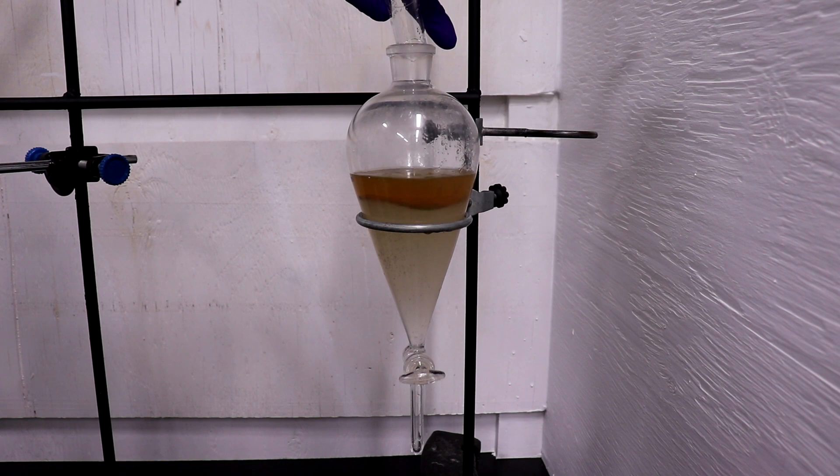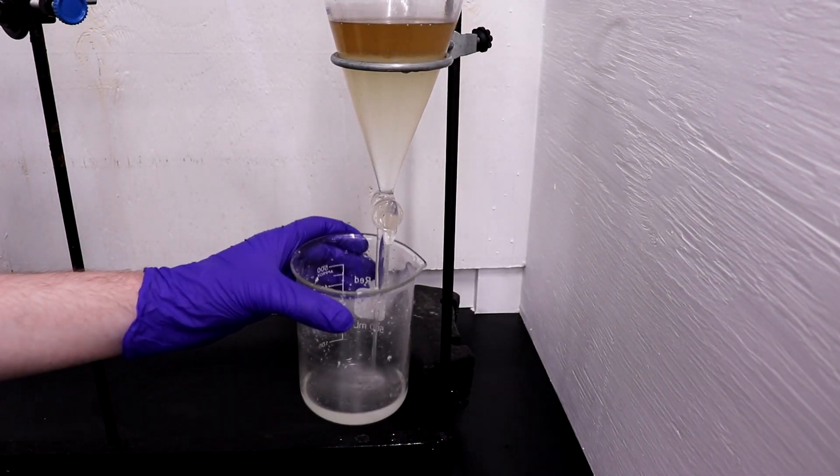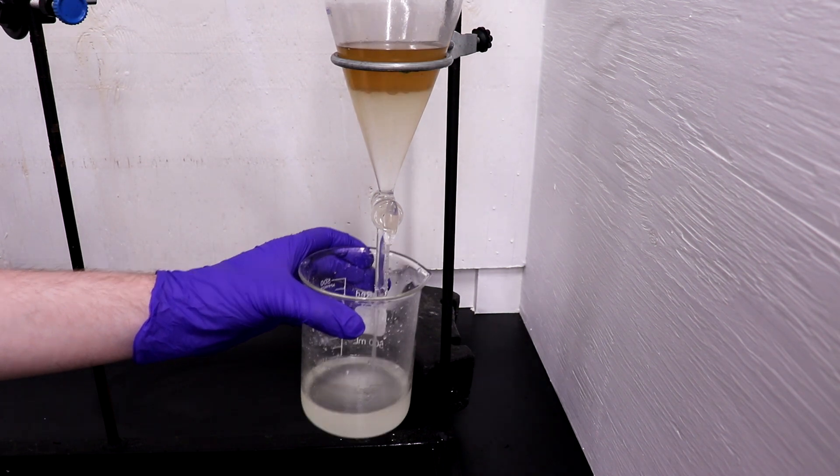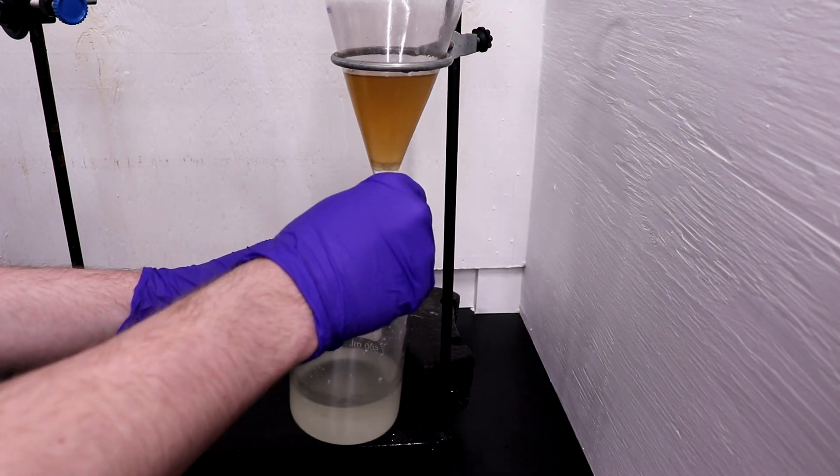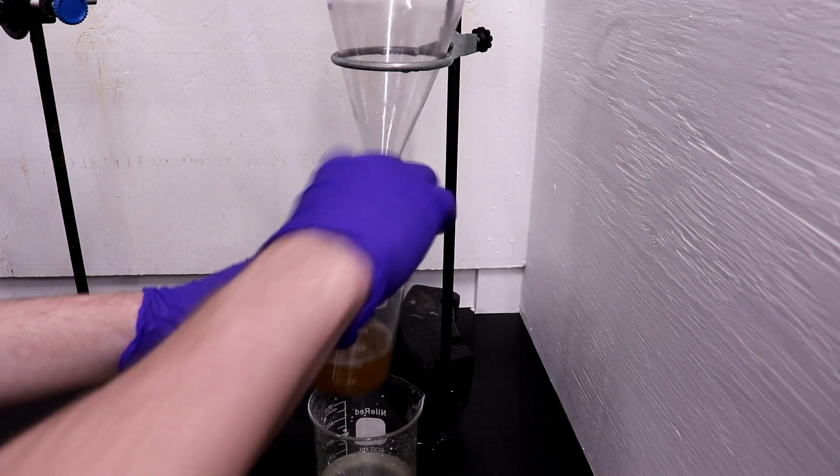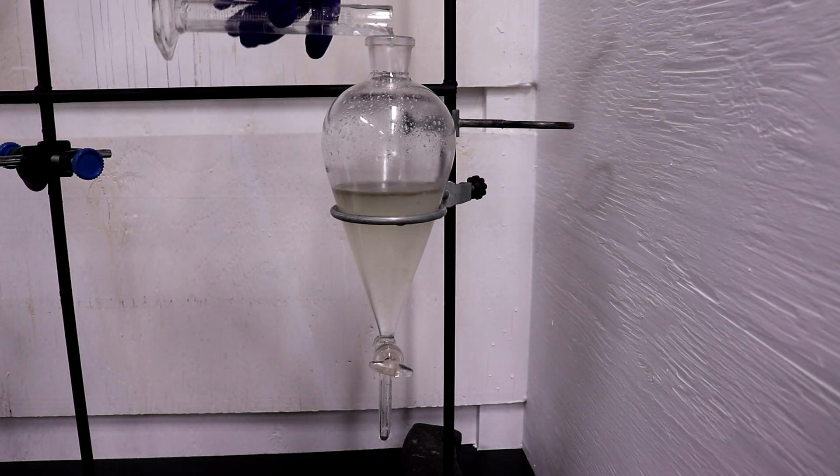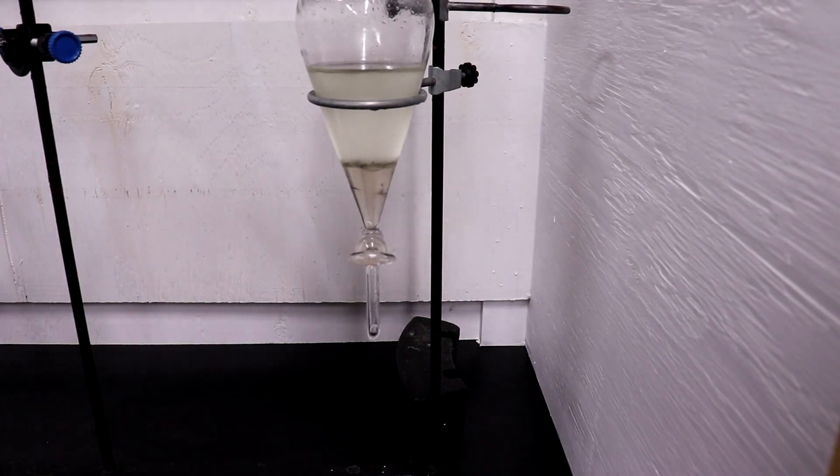I transferred the mixture to a separatory funnel and added 15 mls of DCM. Then, I removed the organic layer and replaced it with the aqueous layer, followed by an additional 15 mls of DCM. After shaking, the DCM layer was removed and added to the toluene solution.